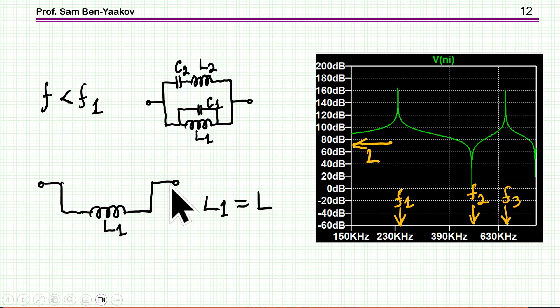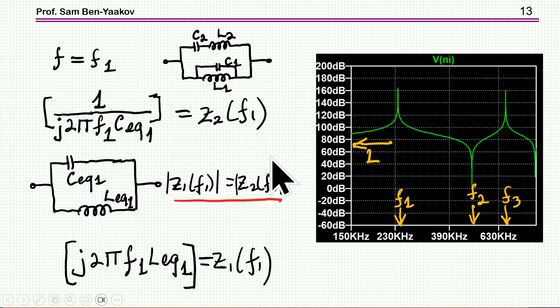That is, at low frequency we have an inductor and it turns out that L1 is equal to this inductor because this is how this circuit behaves at low frequency.